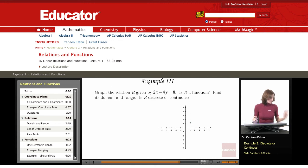In example three, graph the relation r given by 2x minus 4y equals 8. Is r a function? Find its domain and range. Is r discrete or continuous?